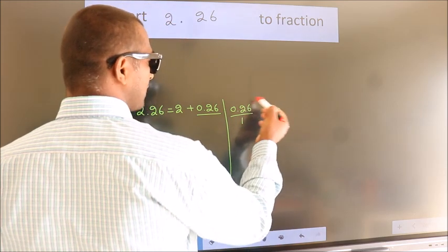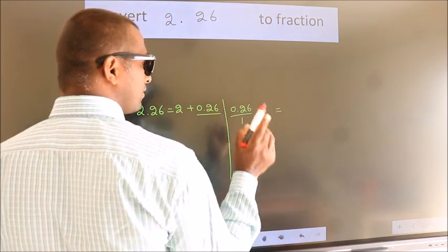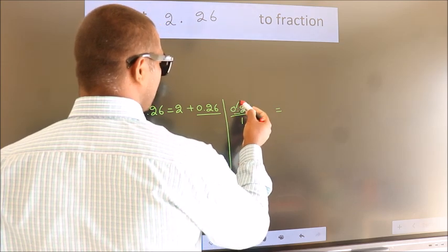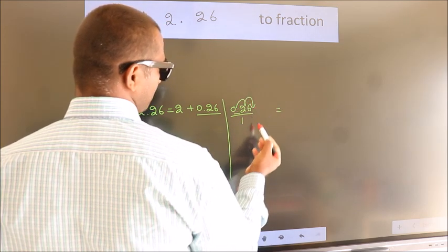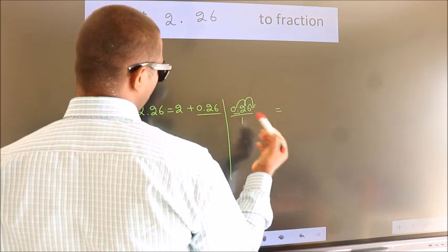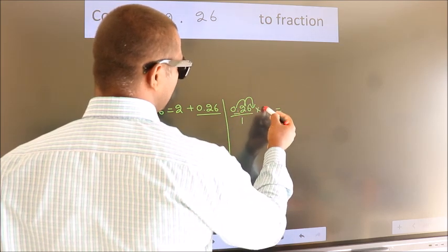To convert this to fraction, we have to move this decimal after 2 numbers. To move the decimal after 2 numbers, multiply it with 100.